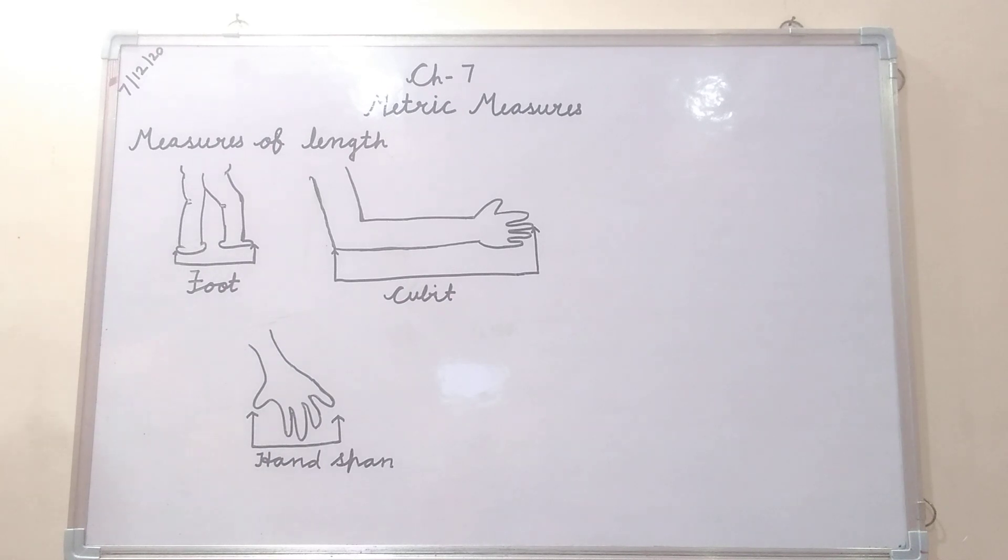So first in this class we will learn about the non-standard unit of measuring length. Why it is called non-standard I will tell you later on. First, you start with this example. You can see here I have made picture of something like first one is foot, second one is cubit and third one is hand span.